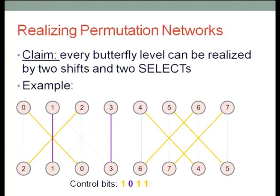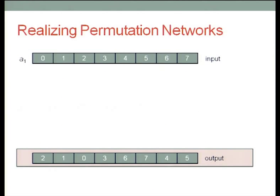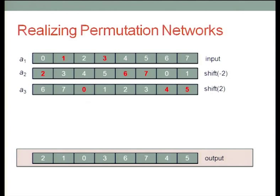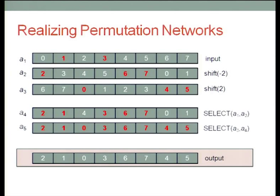Here is a proof by example. This is the second level of the butterfly network, doing exchanges between elements at distance 2. The permutation we want: zero and two are exchanged, one and three go straight, et cetera. We replicate the input array twice, do shift by minus two and shift by plus two. Then we select the appropriate bits from the different ciphertexts: one and three go straight so they come from the first ciphertext; two, six, and seven go left so they come from the second; zero, four, and five go right so they come from the third. So one select operation, another select operation, and we have what we want.